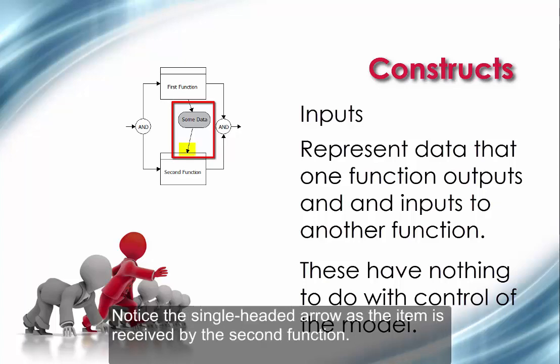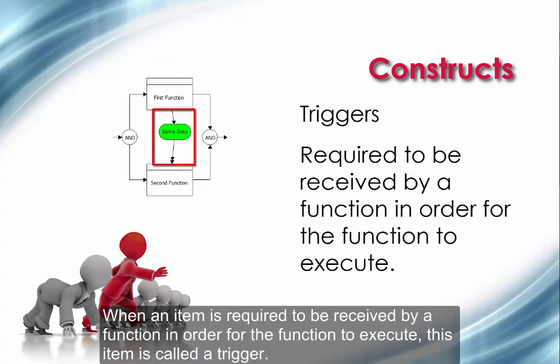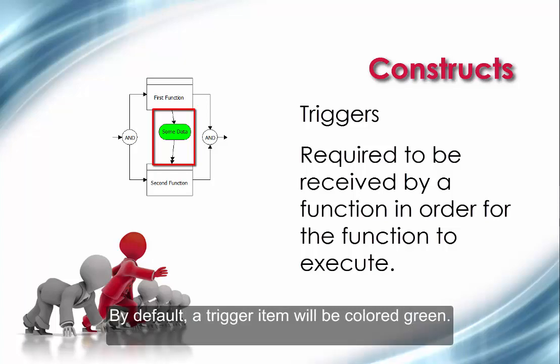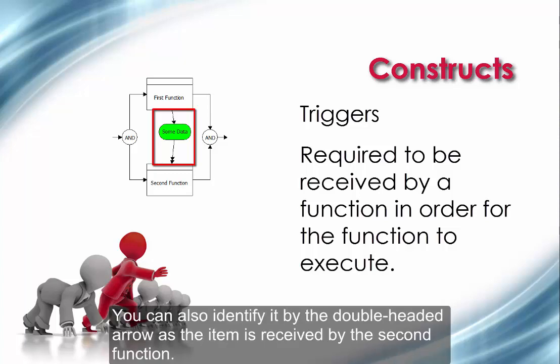Notice the single headed arrow as the item is received by the second function. When an item is required to be received by a function in order for the function to execute, this item is called a trigger. By default, a trigger item will be colored green. You can also identify it by the double-headed arrow as the item is received by the second function.